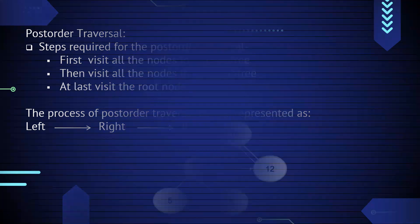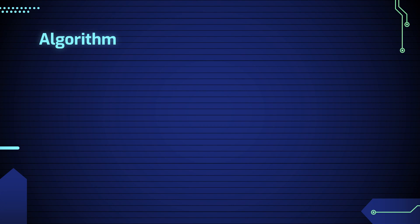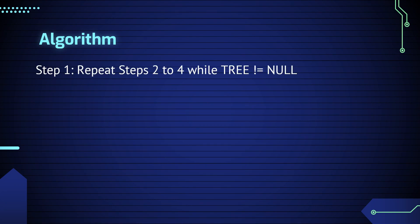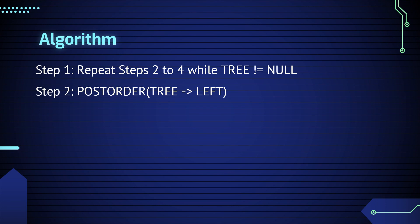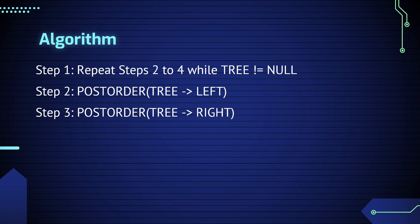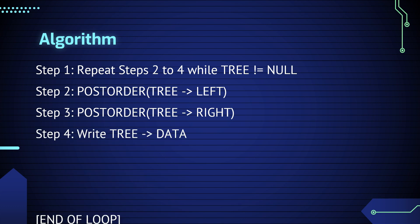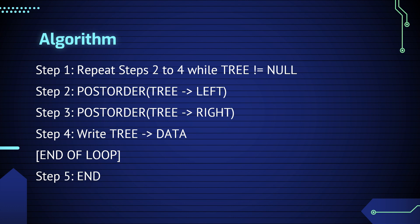The process of post-order traversal can be represented as Left-Right-Root. Here is a diagrammatical representation of post-order traversal. Algorithm of post-order traversal: Step 1 - Repeat steps 2 to 4 while tree is not equal to null. Step 2 - Post-order tree left. Step 3 - Post-order tree right. Step 4 - Write tree data. End of loop. Step 5 - End.